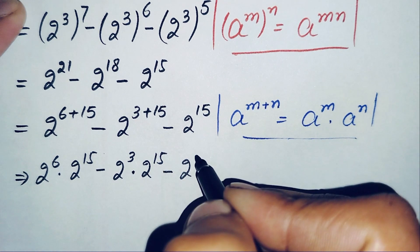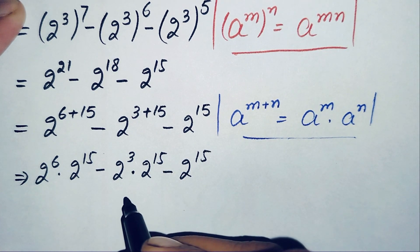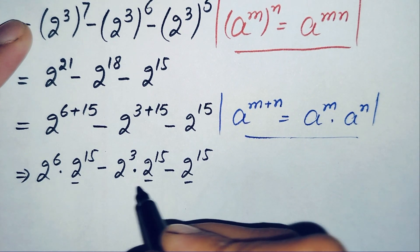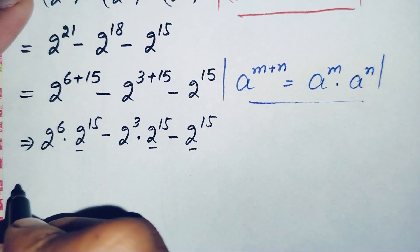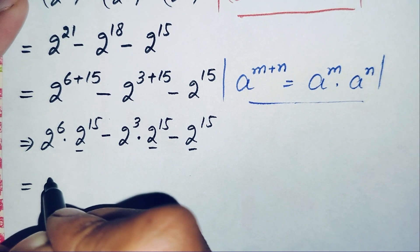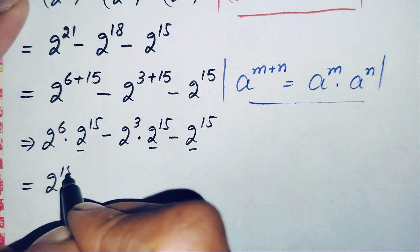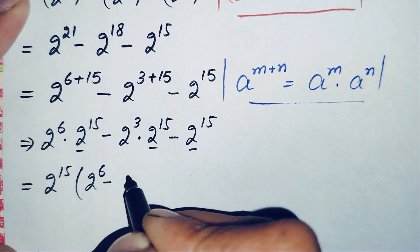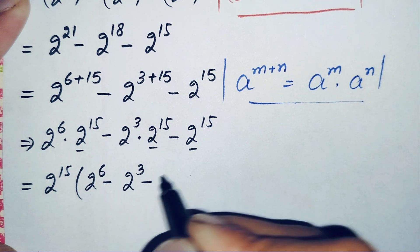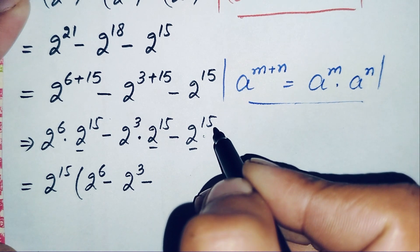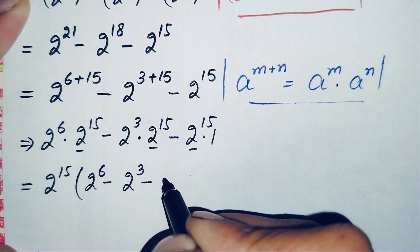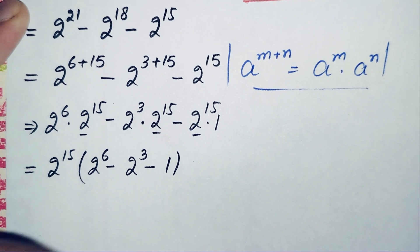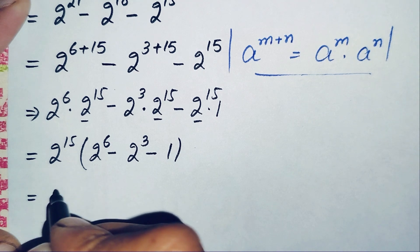Now looking at all the terms, 2 raised to power 15 is common. So we take it common from all the terms. This will become: 2 raised to power 15 times, in brackets, 2 raised to power 6 minus 2 raised to power 3 minus 1.